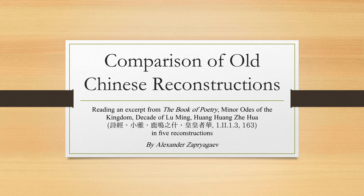Hello to all the viewers! Today we are going to compare several old Chinese reconstructions. I have chosen an excerpt from the Book of Poetry — specifically the four lines from the beginning of one of the odes — and today we are going to read them in no less than five different old Chinese reconstructions, in order to get a feeling of which particular details differ, which are alike, and to understand both the variety of thought currently existing in the field of old Chinese reconstruction and the details that have surely become non-controversial.